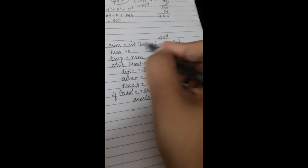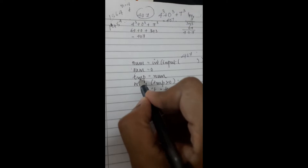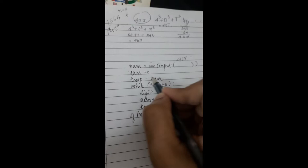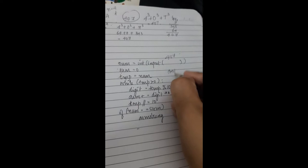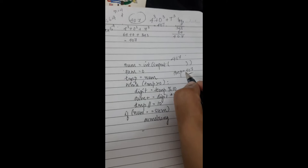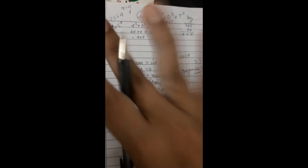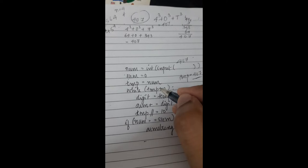Now look into the program. Here num is equal to int of input, so you will give your input as 407. Then you keep one variable sum as zero — initially it is zero. Then you keep a temporary variable; this is called a temp variable, used only within your program. The same value you took as input is stored here, so temp is equal to num. Now temp will have the value 407, and all calculations will use temp, not num, even though both contain the same value.